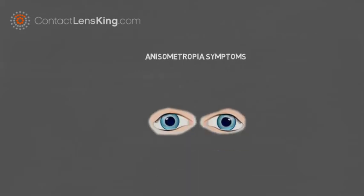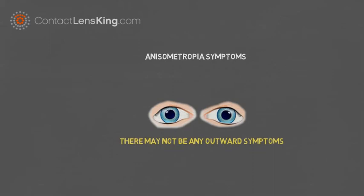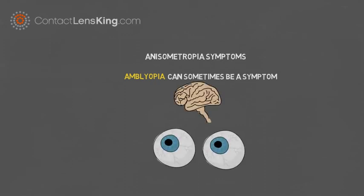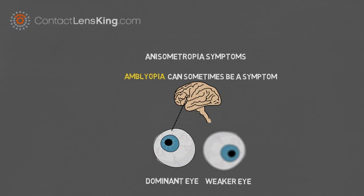But what are the symptoms associated with anisometropia? In many cases there may not be any outward signs of the disorder. However, amblyopia, or lazy eye, can be a symptom or result of anisometropia. Since one eye may experience poorer vision than the other, the brain may choose the other eye as the dominant one. This preference can cause the weaker eye to become less utilized, further impeding its ability to focus and resulting in weakening of the eye muscles.